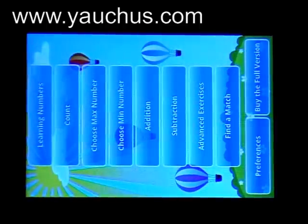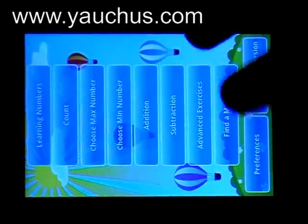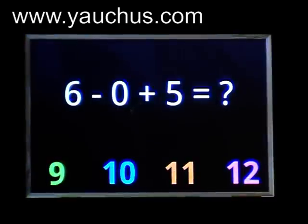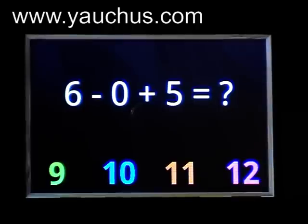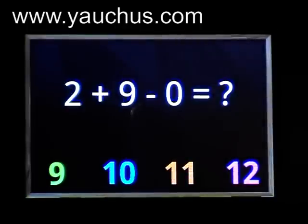Now we'll practice another exercise. This one is hard — find the solution, we have to count. Six plus five: one, two, three, four, five — it'll be eleven. Perfect. When you get it right, you get a prize.